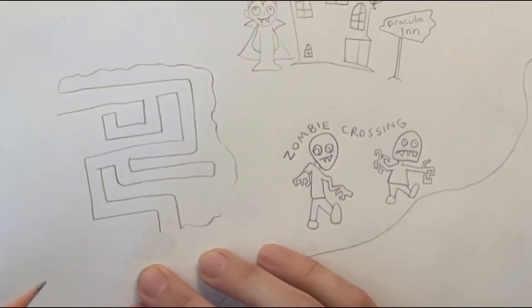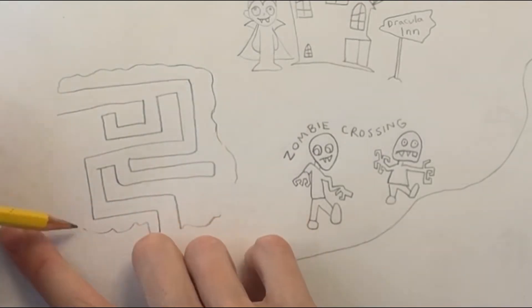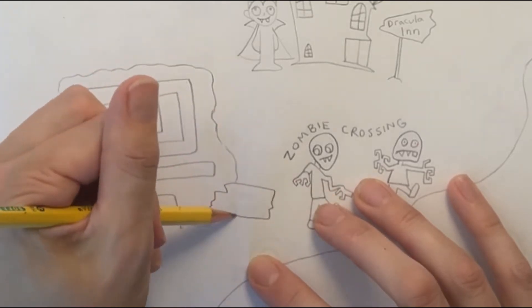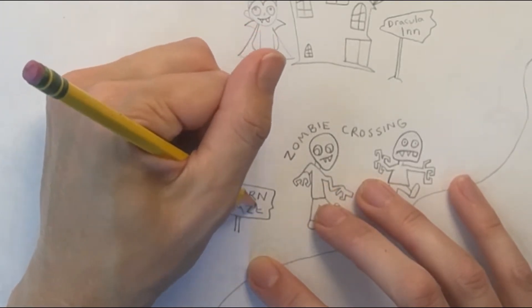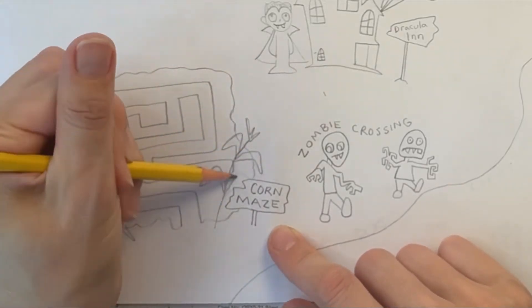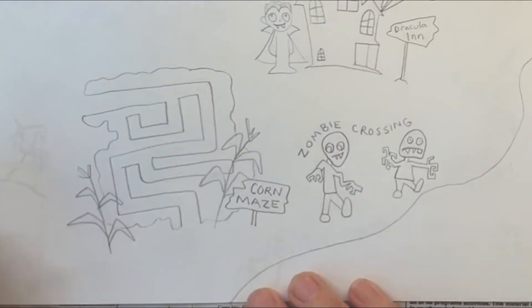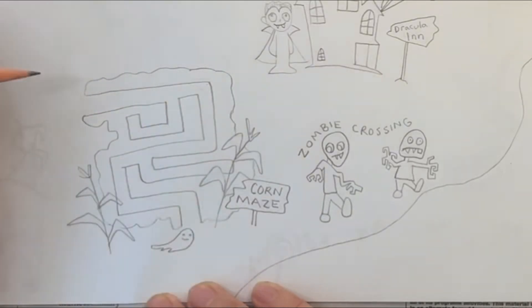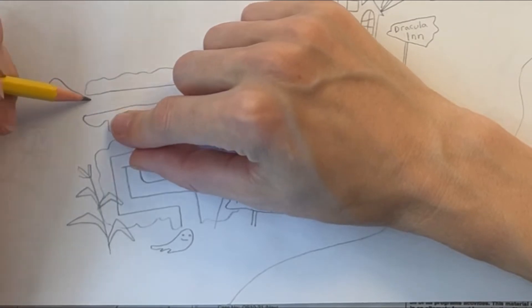Once you have drawn your maze, draw a bushy line around it. These are the corn stalks growing around the maze. I'm adding a sign in front that says corn maze. To make it look a bit more like a corn maze, I'm drawing a couple corn stalks in front. I'm drawing a cute little ghost flying into the maze and then another ghost flying out of the maze.